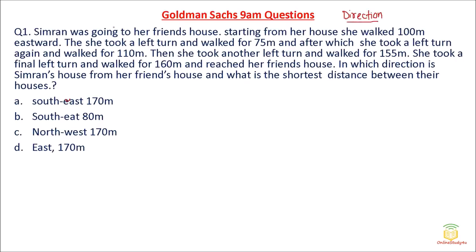Now let us see how we can solve it easily. Simran was going to her friend's house. Starting from her house, she walked 100 meters eastward. Before solving a direction question, we need to make one basic diagram of directions — North, East, South and West. Simran went 100 meters eastward. Then she took a left turn and walked 75 meters. Remember: clockwise means right, anti-clockwise means left. So she is going 75 meters after turning left.